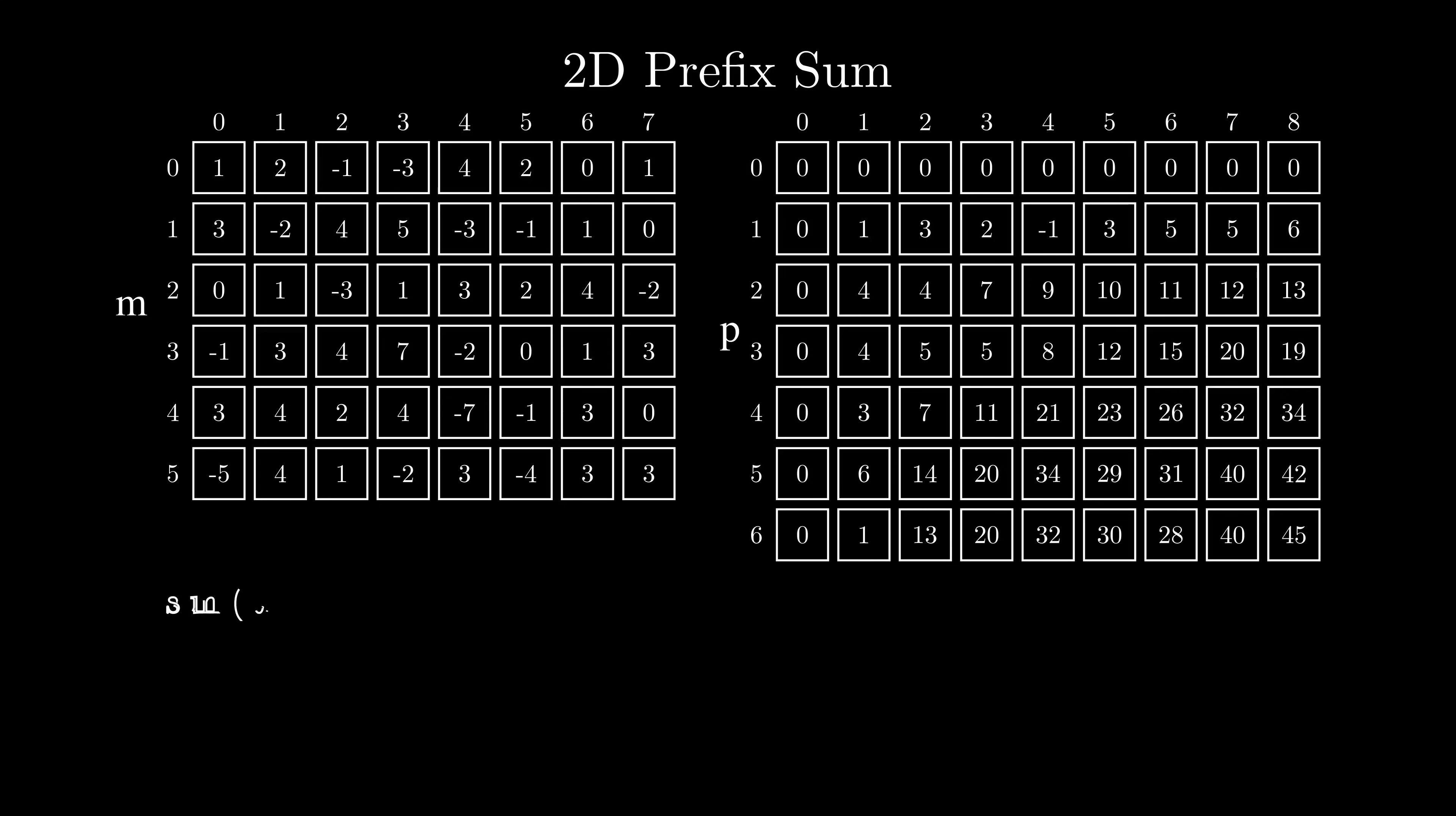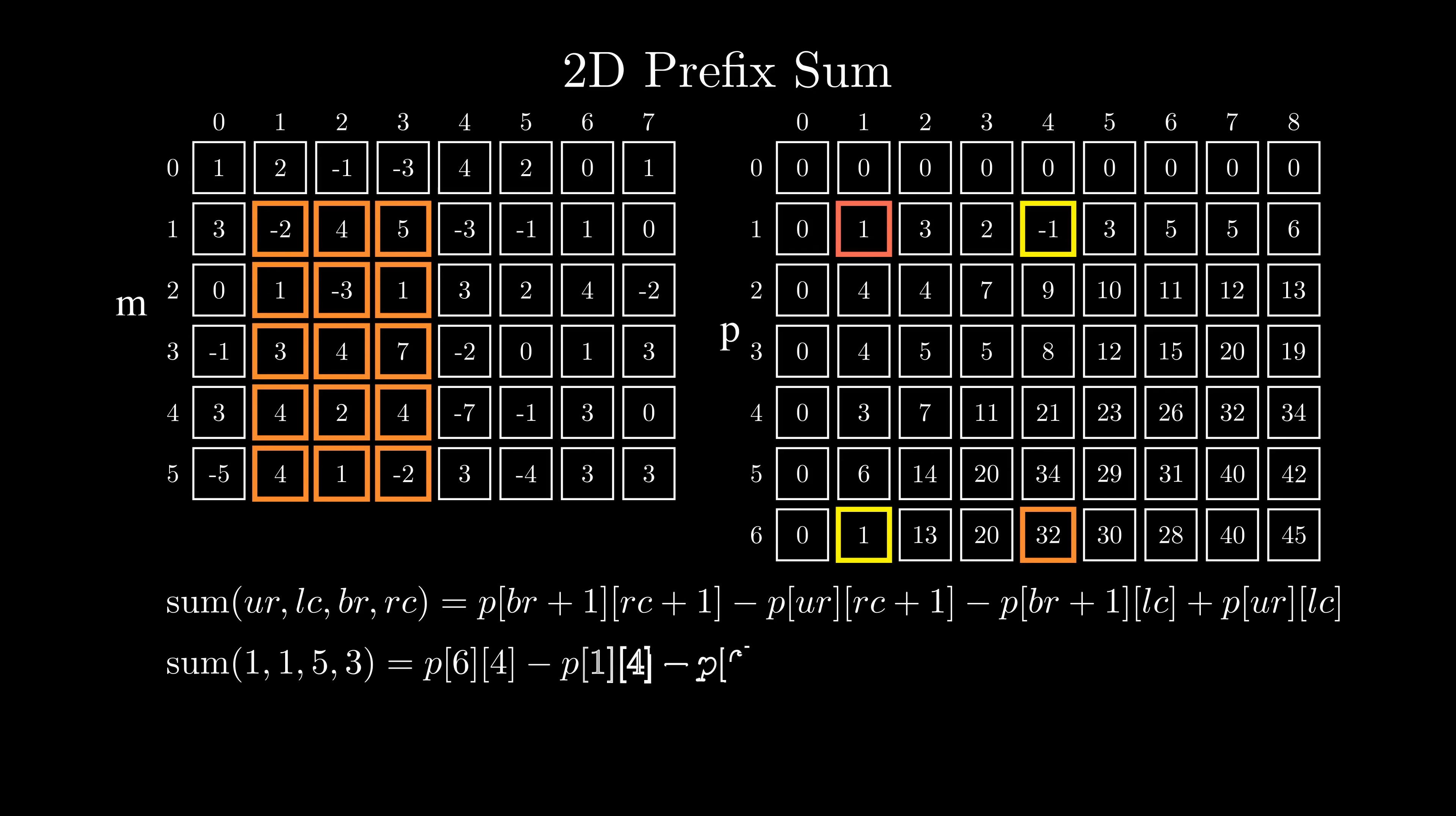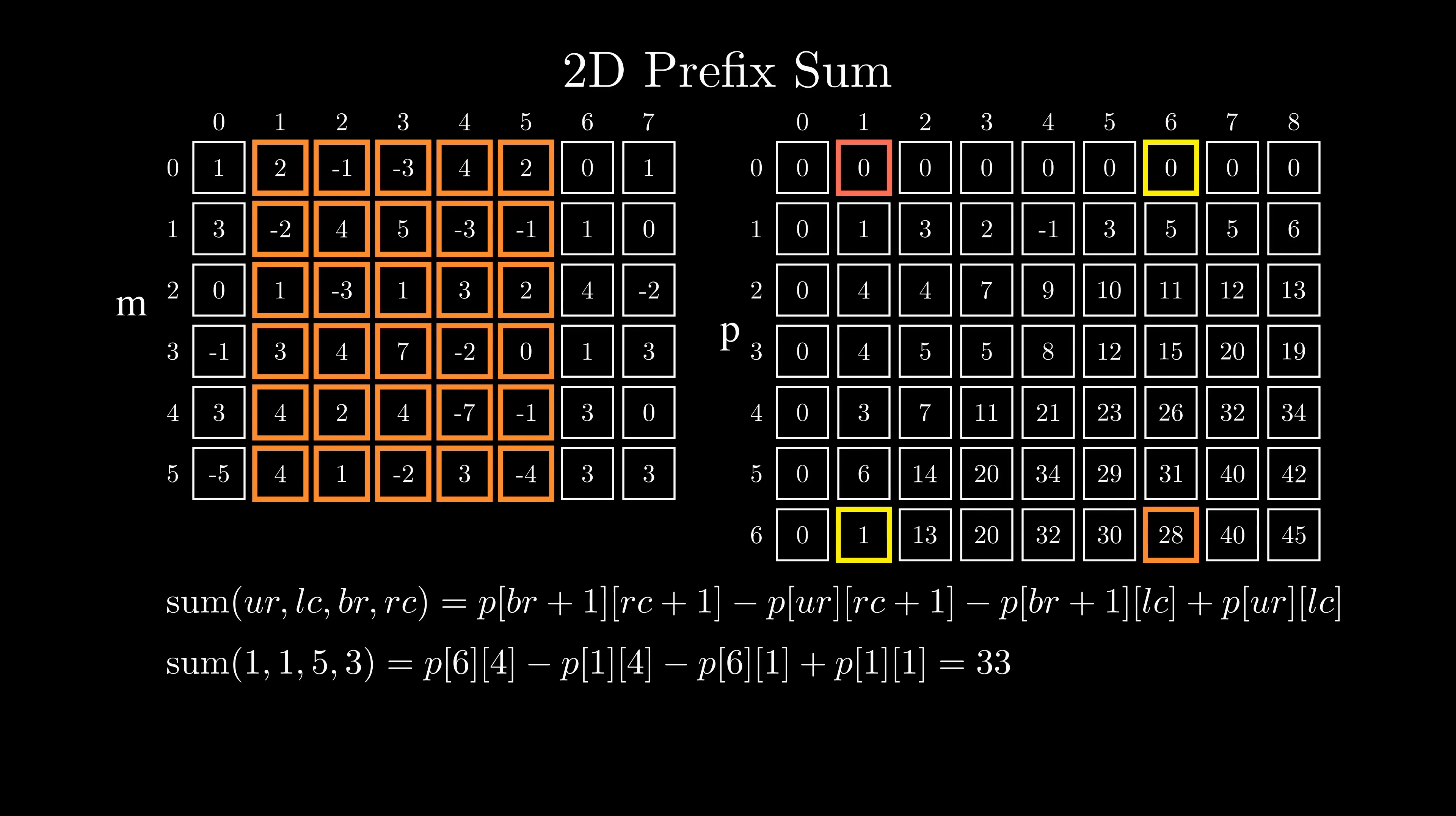Now that we have the prefix summary, we can answer queries like what will be the sum of a submatrix from 1,1 to 5,3 using a single calculation. Similarly, the sum of a submatrix spanning the cells 0,1 to 5,5 would be calculated using the four corners of the requested rectangle with only a single operation instead of looping through all the values of the submatrix and adding those values together.